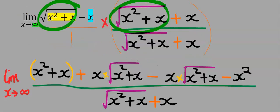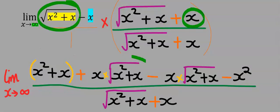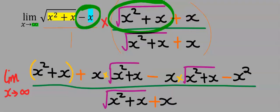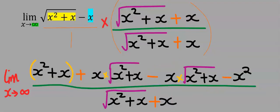Next, this will multiply this and you're going to get this. Next, this will multiply x and you're going to get this. Next, this minus x will multiply this and you're going to get this.